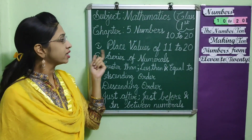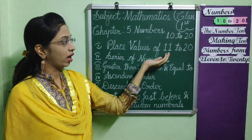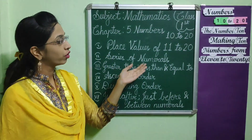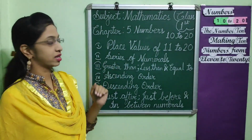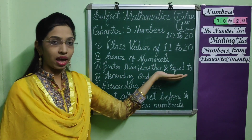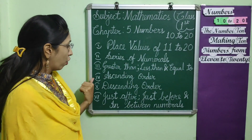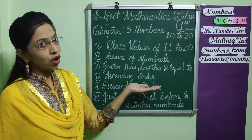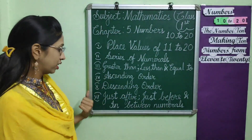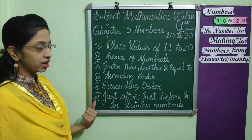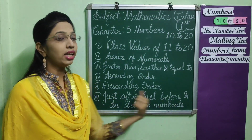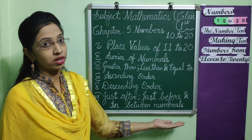First is place value of 11 to 20. Second, series of numerals. Third, greater than, less than and equal to. Fourth, ascending order. Fifth, descending order. Sixth, just after, just before and in between numerals.